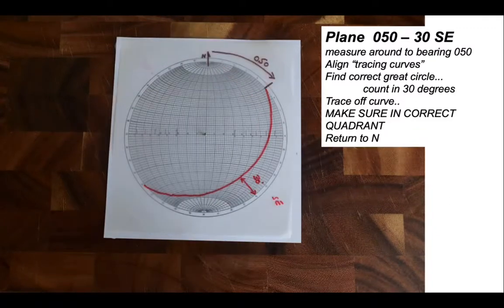That's especially obvious if we return everything back round to north. You can see that the great circle bows towards the southeast. So that's simply how we plot a plane. It could be a bedding plane as a great circle on the stereonet.